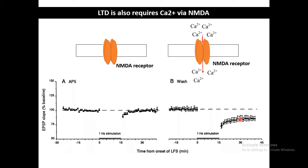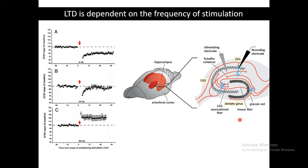LTD is highly dependent upon the frequency of stimulation. High frequency stimulation can give rise to potentiation, whereas low frequency stimulation, 1 Hertz to 10 Hertz, can give rise to LTD.